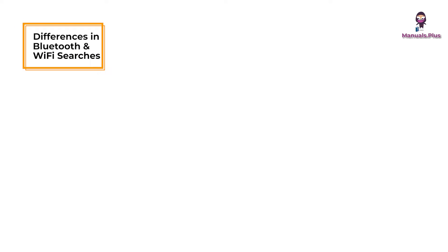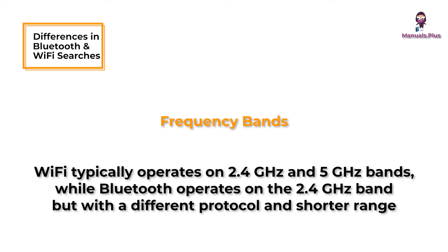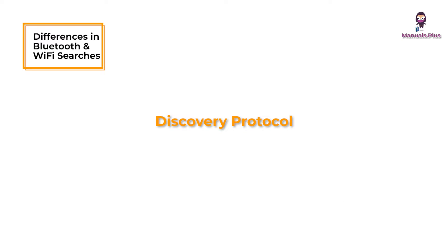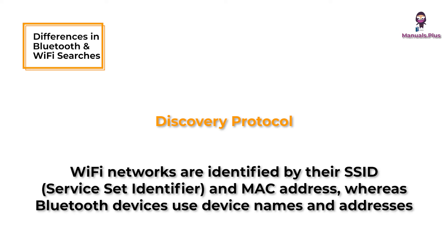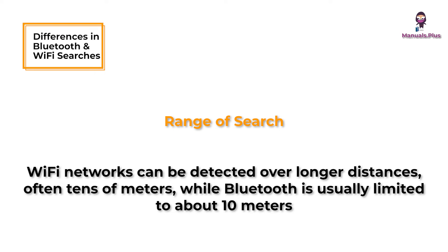The accuracy of the location data can vary depending on how many times and by how many different users the network has been logged. Differences between Bluetooth and Wi-Fi searches on Wigle — Frequency Bands: Wi-Fi typically operates on 2.4 and 5 GHz bands, while Bluetooth operates on the 2.4 GHz band but with a different protocol and shorter range. Discovery Protocol: Wi-Fi networks are identified by their SSID and MAC address, whereas Bluetooth devices use device names and addresses. Range of search: Wi-Fi networks can be detected over longer distances, often tens of meters, while Bluetooth is usually limited to about 10 meters.